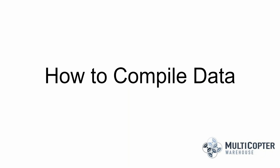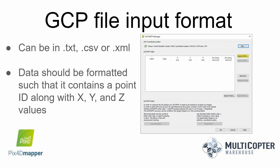Let's talk about how to compile the data to add into PIX4D software. You'll want to create a GCP file — a text file (.txt), a CSV, comma-delimited file, or even an XML file, though TXT or CSV formats are preferred. The data just needs to be formatted with an ID identifying the point, a point label, and then the X, Y, and Z coordinate values. You'll use the GCP MTP manager to enter that data into the software.